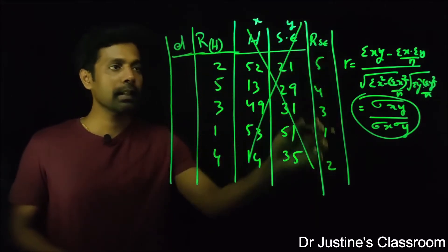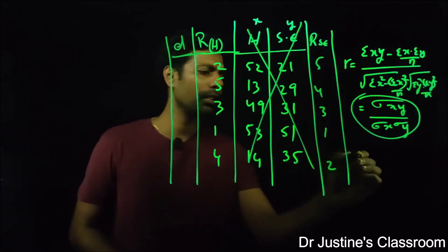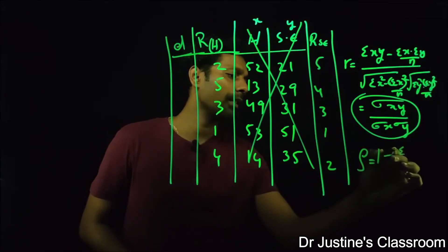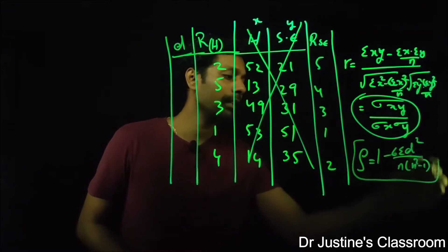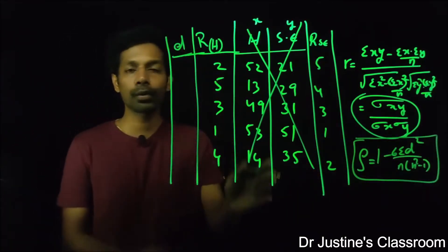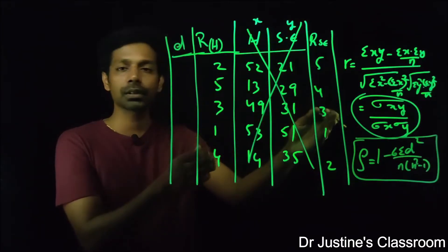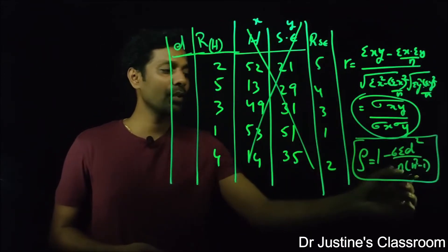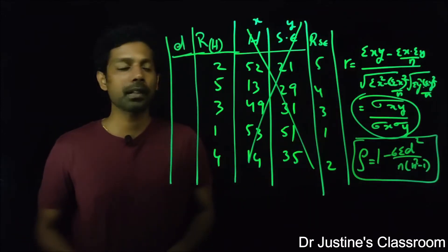The ranks and corresponding d values are used in the Spearman formula: ρ = 1 − [6·Σd²] / [n(n² − 1)]. Notice that in this equation we are not using the original parameter values — we convert the original parameters to ranks and use those instead.